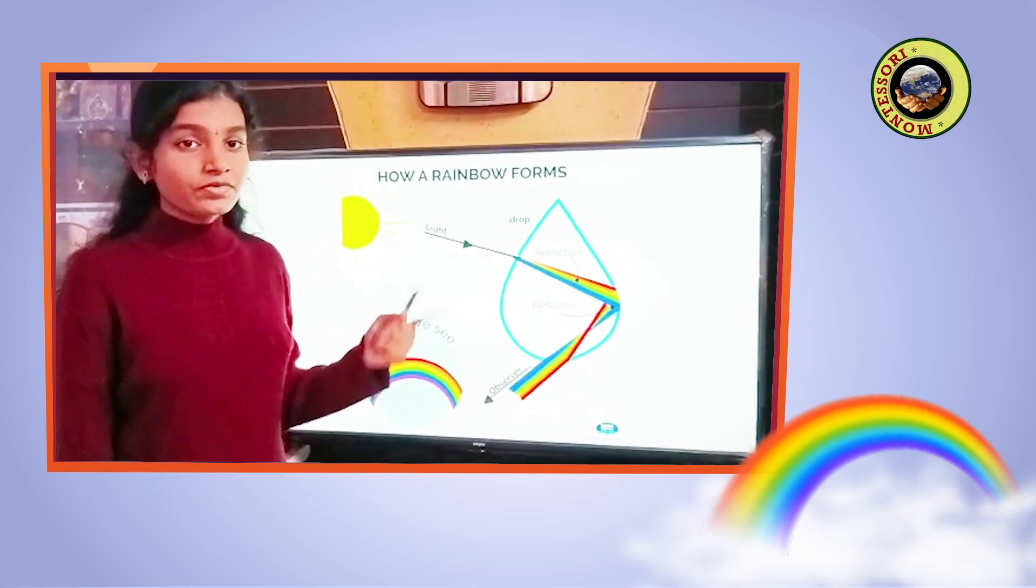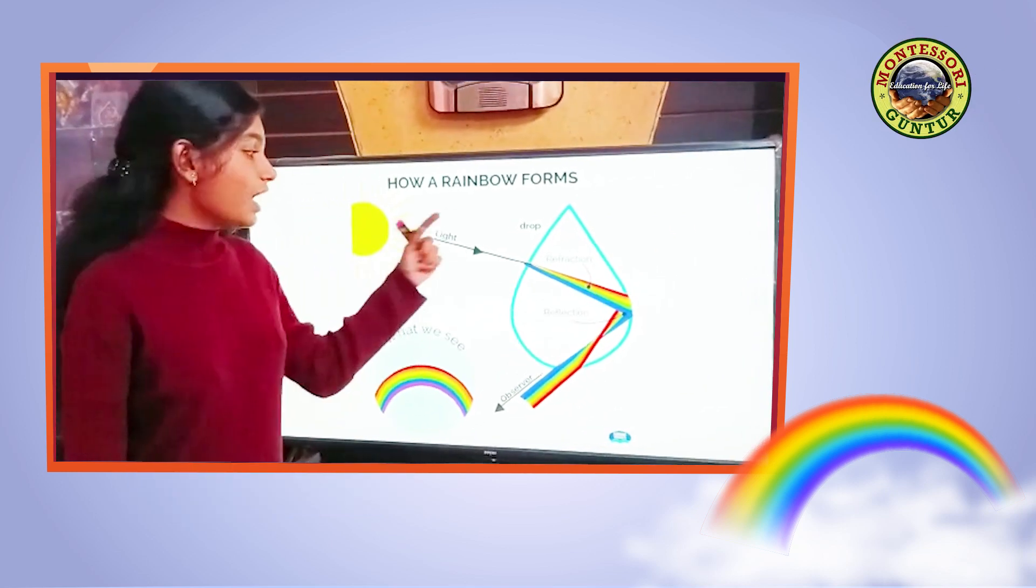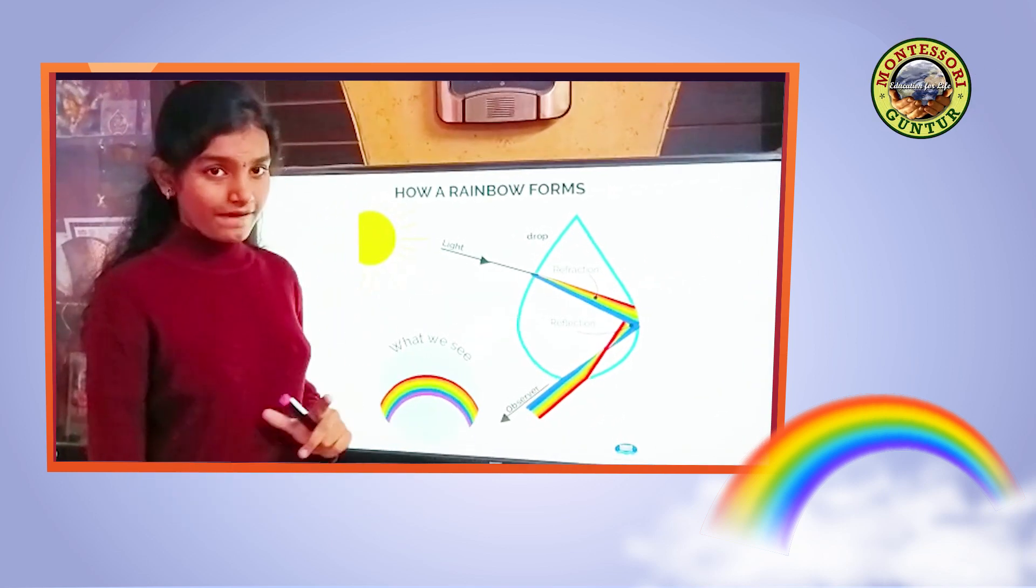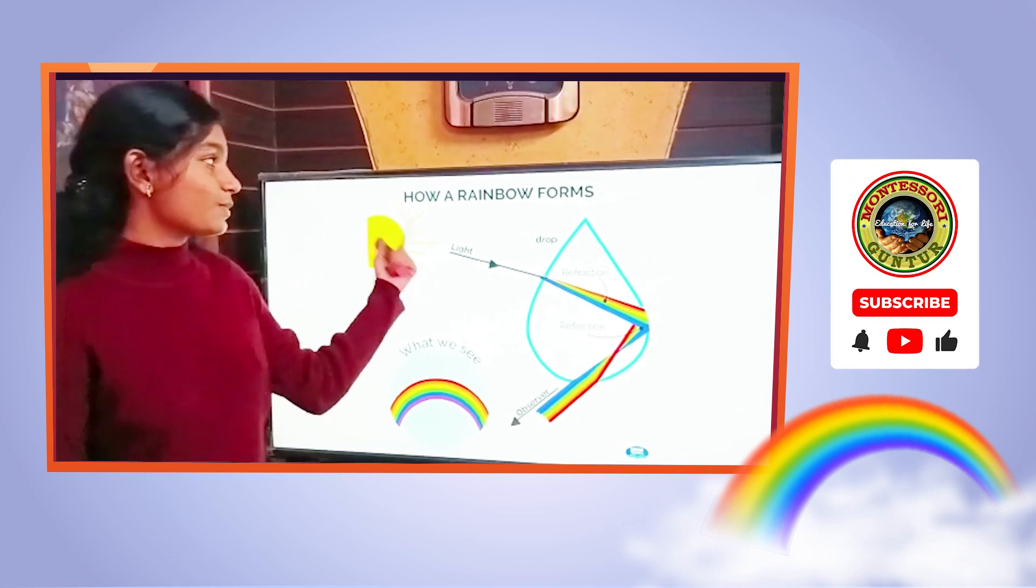So to see a rainbow, we should stand behind the sun and the rainbow should be in front of us. So now let us see the formation of rainbow.